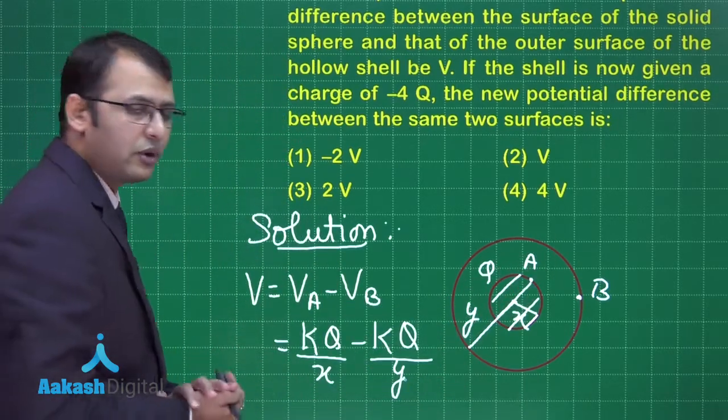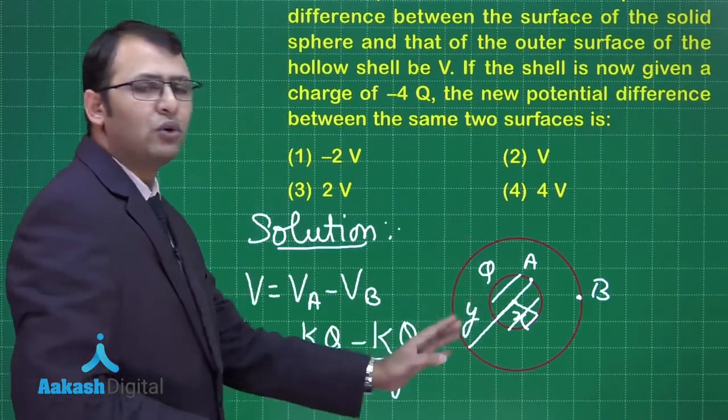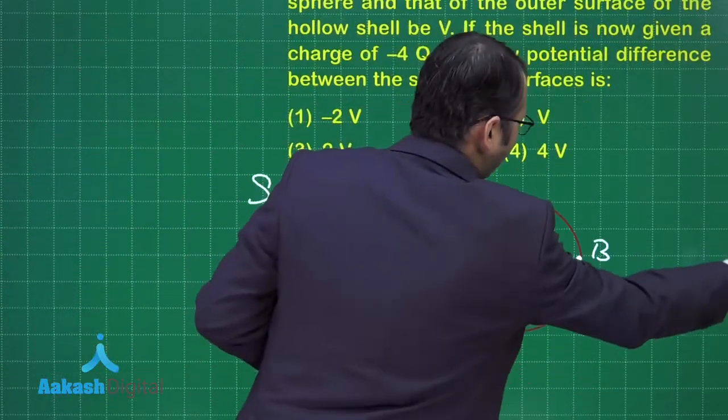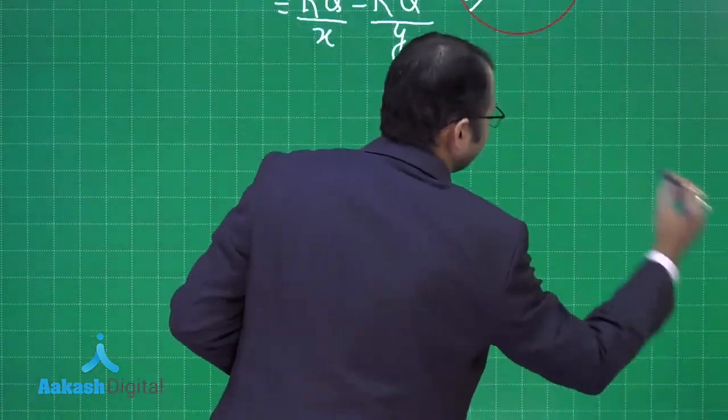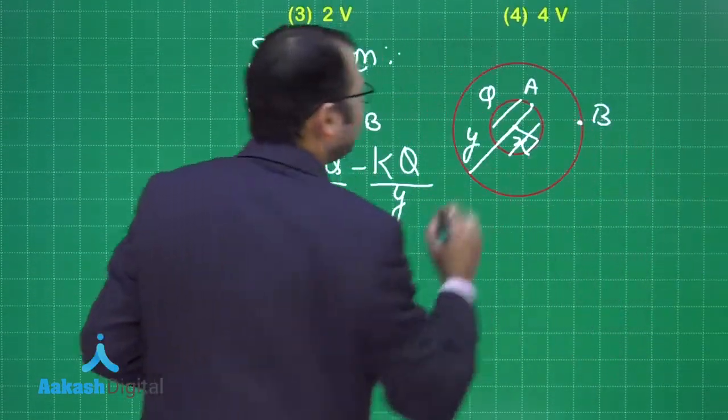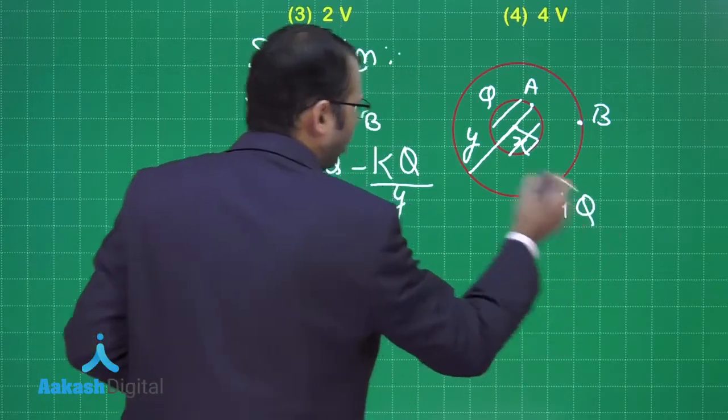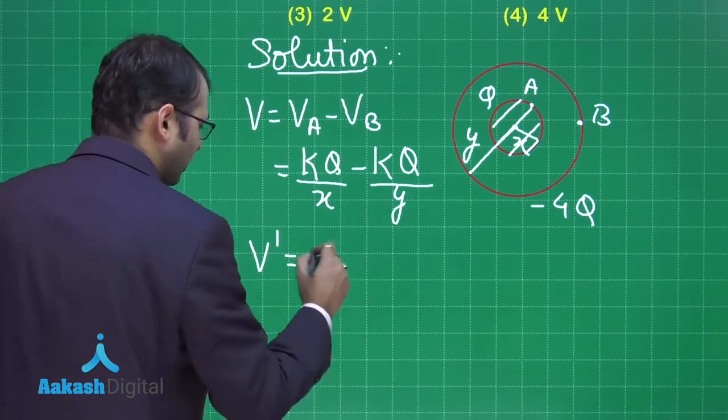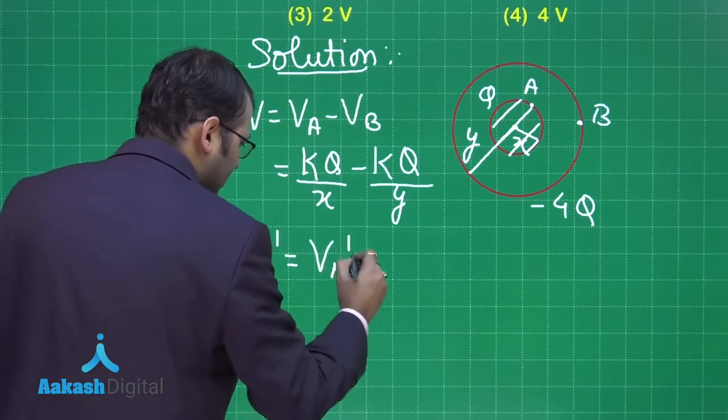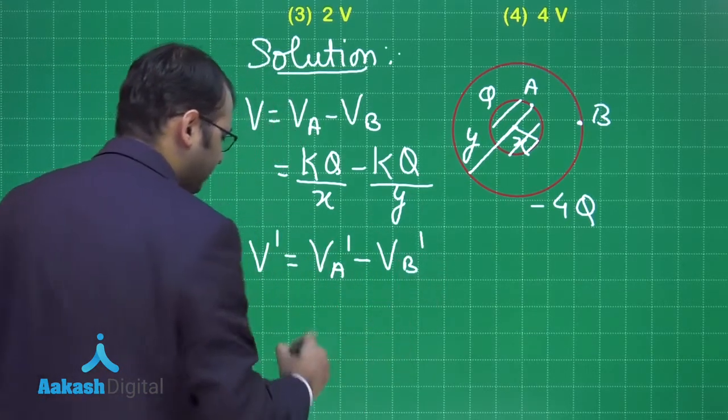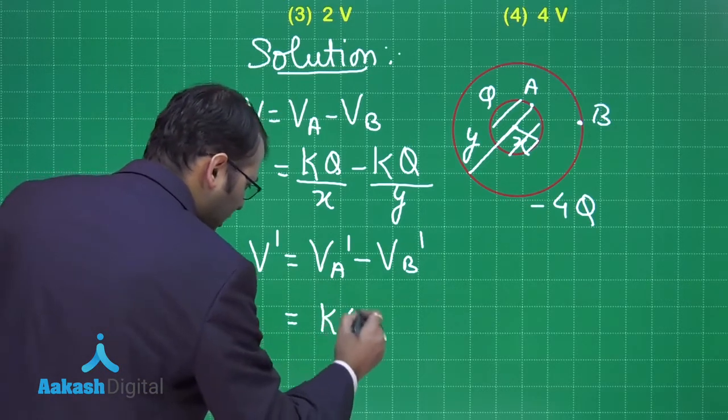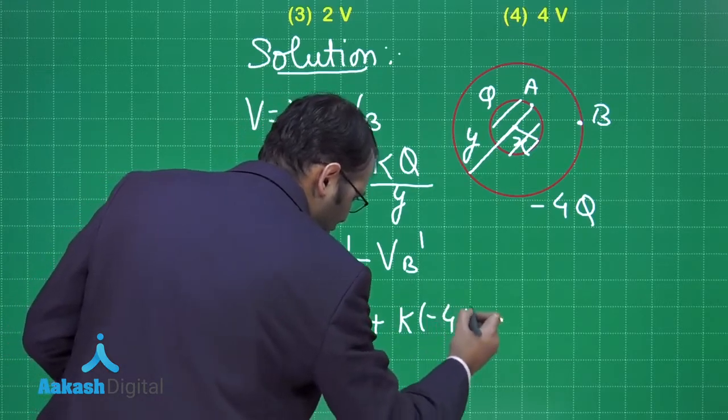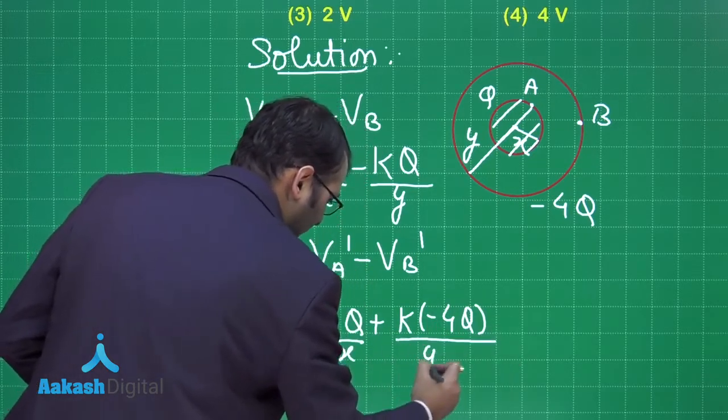Even with induction of charge there will be no different answer. Now when a charge -4Q is given here, what will happen? V' after adding the charge -4Q will be Vₐ' minus Vᵦ'. What would be the value of V'? It would be kQ/x plus k times -4Q divided by y. This would be the new potential of A.